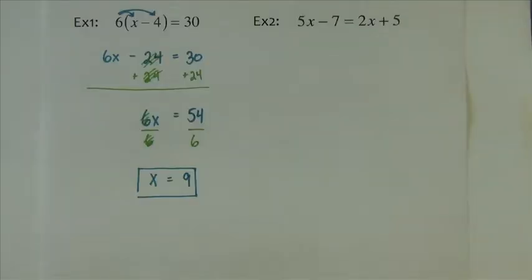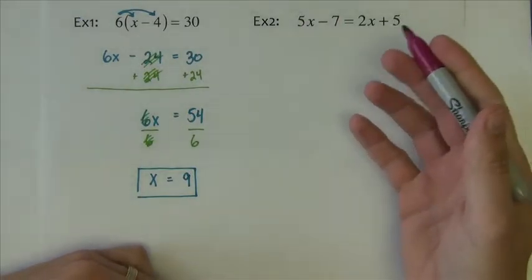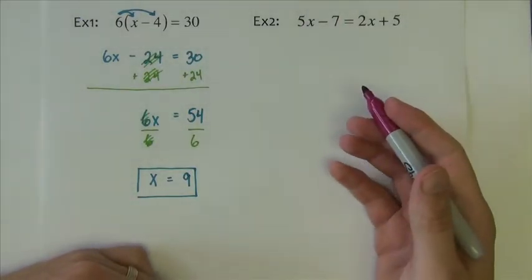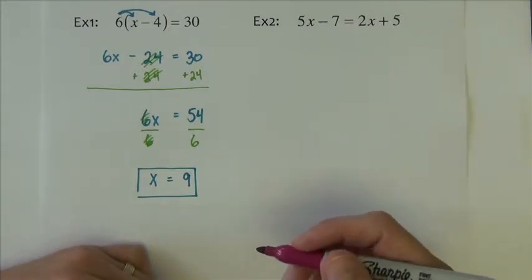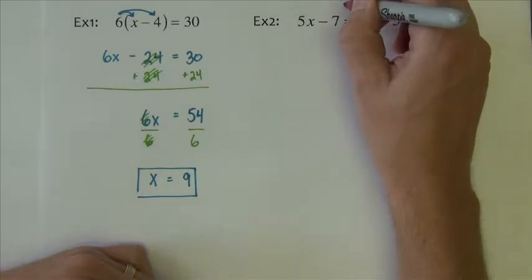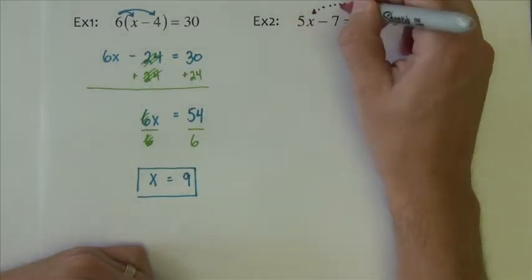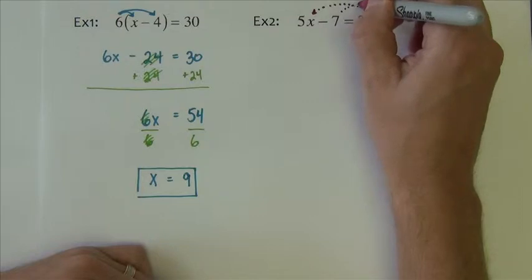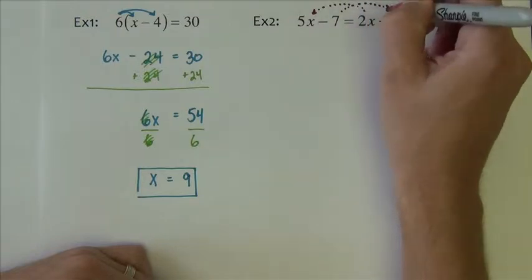Next problem, no distributive property. It's just going to be moving terms around so that we can isolate the x's and isolate the non-x's. So I'm going to take my x's to this side. I'm going to take my non-x's to combine over to this side.